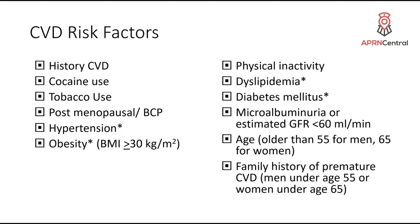Remember the number 30 — greater than or equal to 30 equals obese for the BMIs. Do they have an inactive lifestyle, a desk job with not a lot of activity? Do they have a history of dyslipidemia, diabetes? Those are a couple of the big ones. Do they have microalbuminuria — that could tell us something is going on with their kidneys — or a GFR less than 60? Age matters, and for family members who have had a history of premature cardiovascular disease: for men it's 55, for women it's 65.